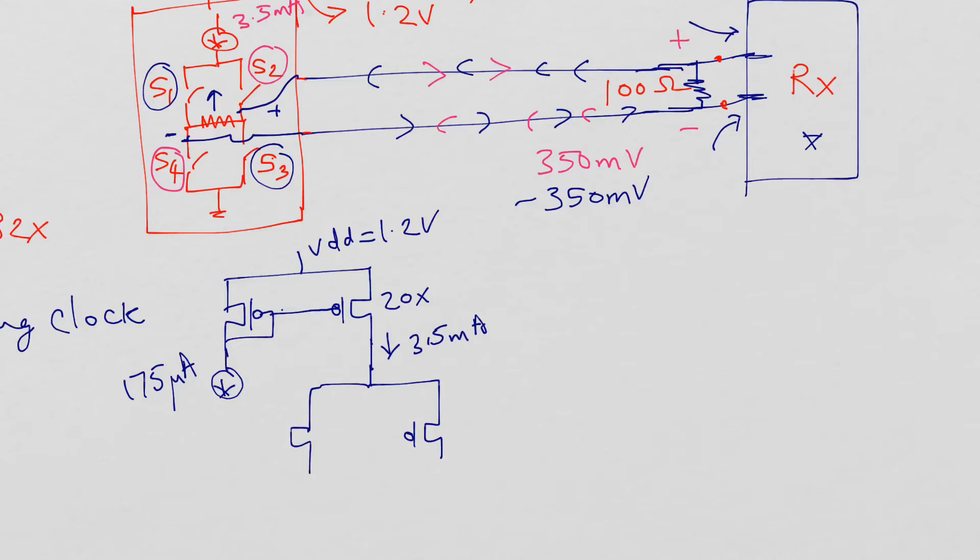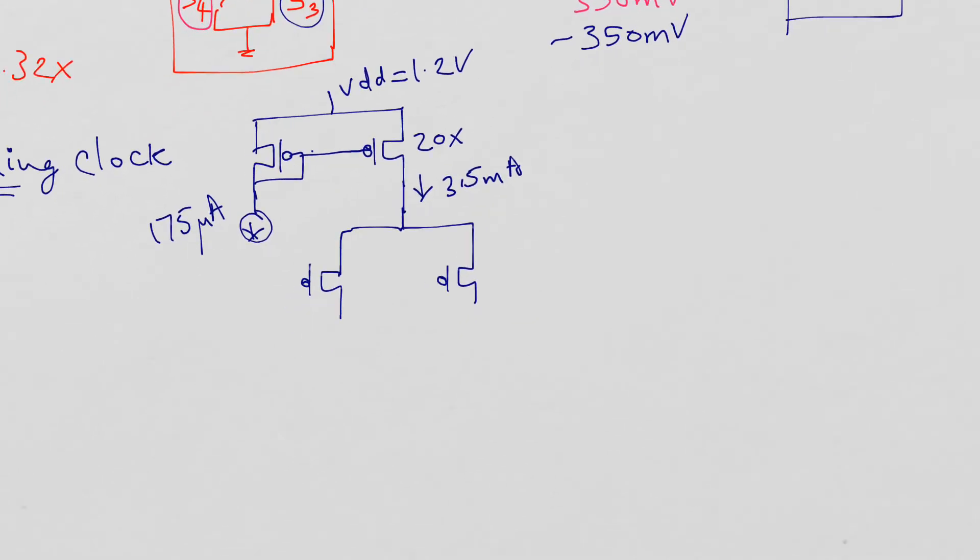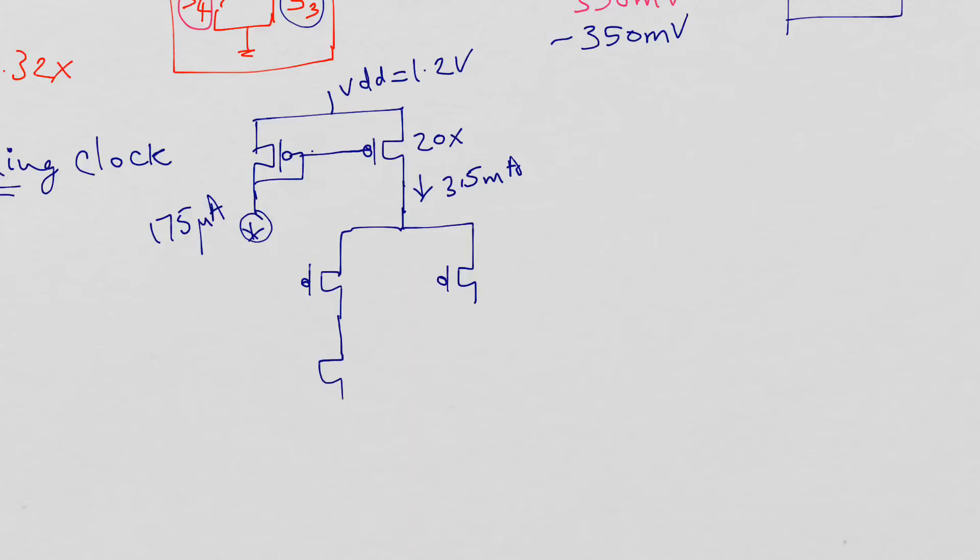I implemented the switches using p-channels, n-channels here, and n-channels for the ground switch. We call this plus here, call this minus here. You have p1 and n1, these are on at one time, and p2 and n2, these are on at another time when you're transmitting a zero.